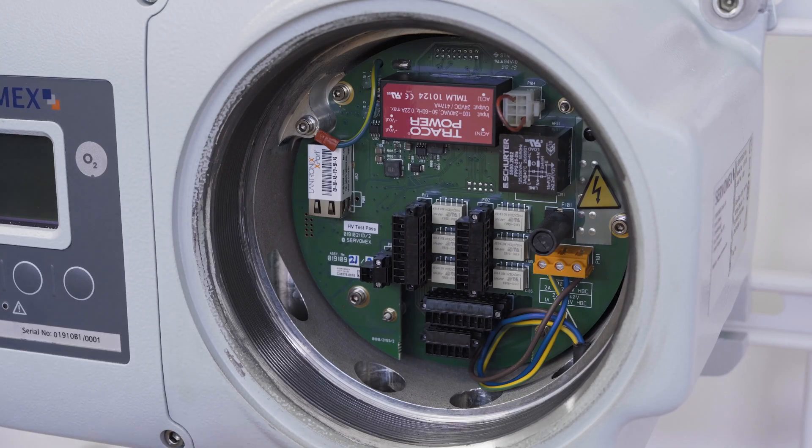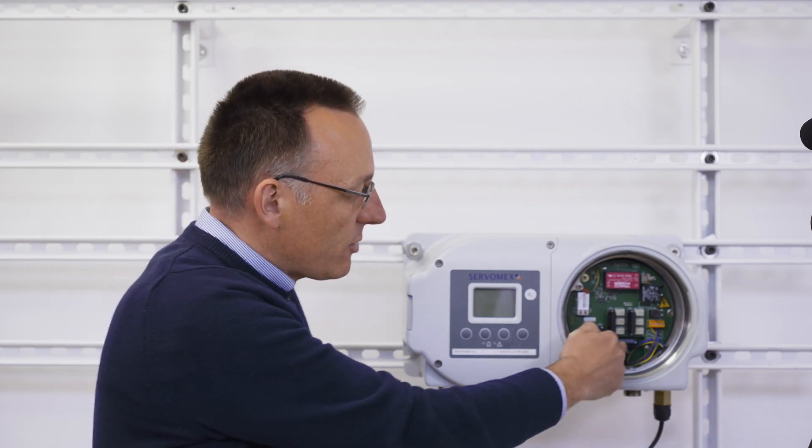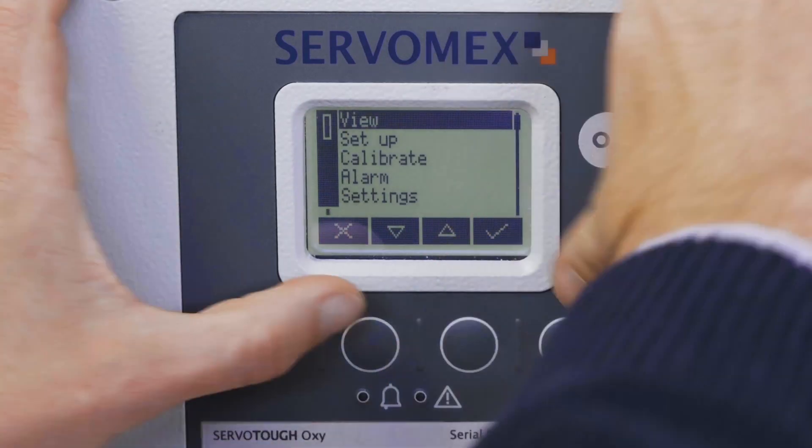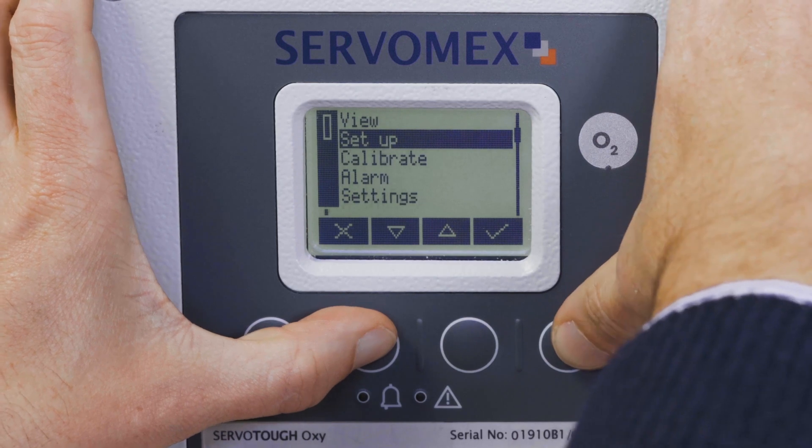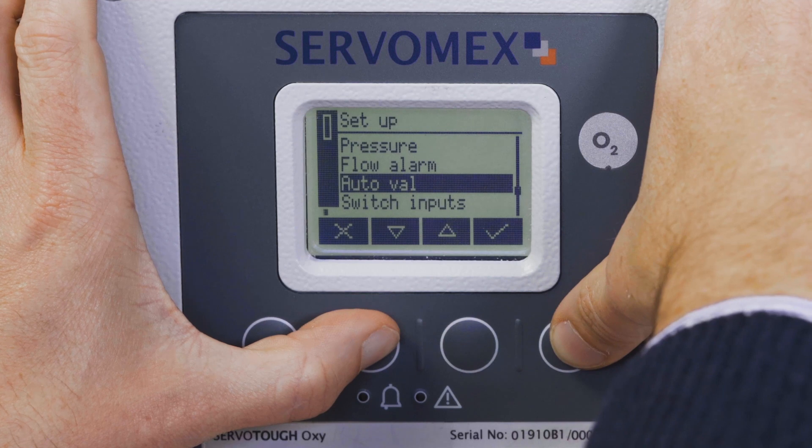An optional auto calibration validation control PCB is available. This adds three additional low voltage relays to control sample low or high calibration gas flows and three digital inputs to control the auto validation calibration sample switching functions that control either automatic or remote calibration modes. The auto calibration or validation cycle can be easily configured from the menu system to suit the specific process requirements.